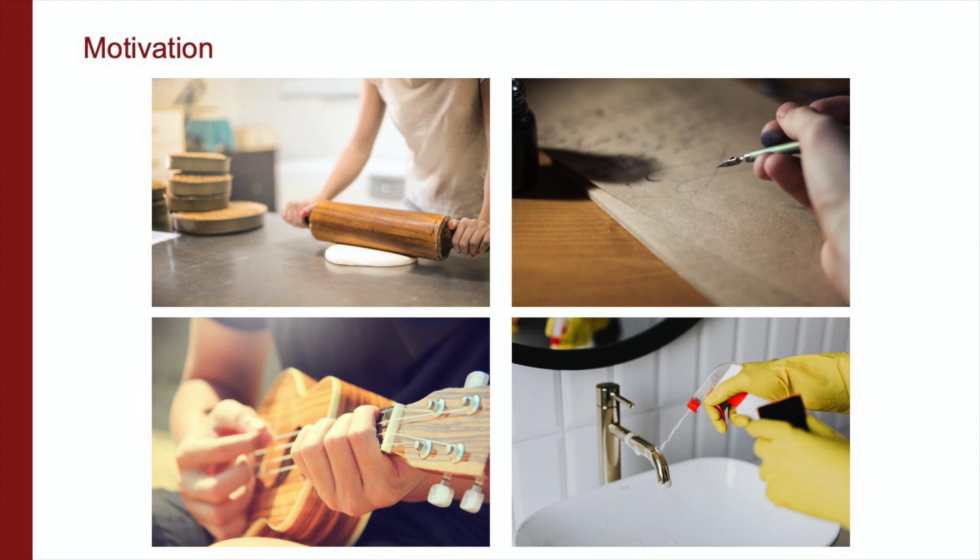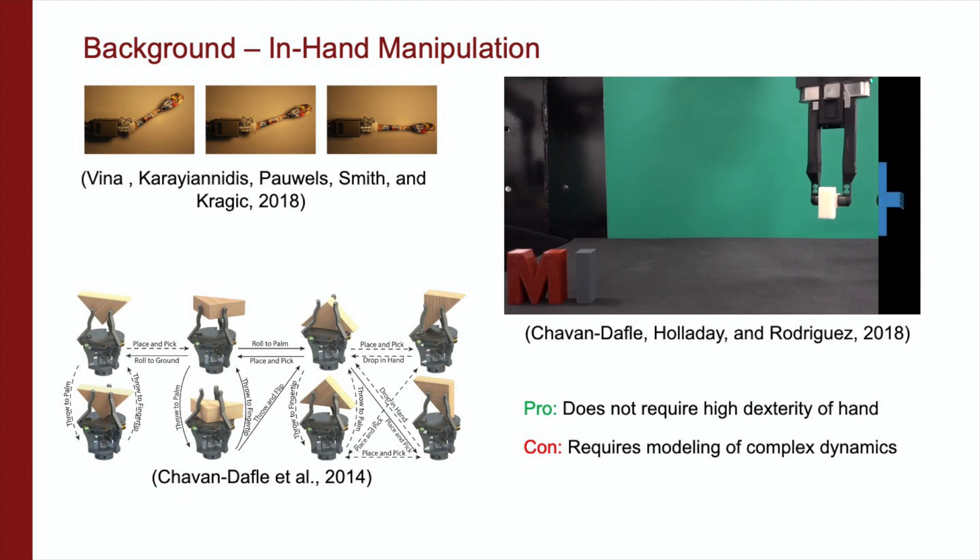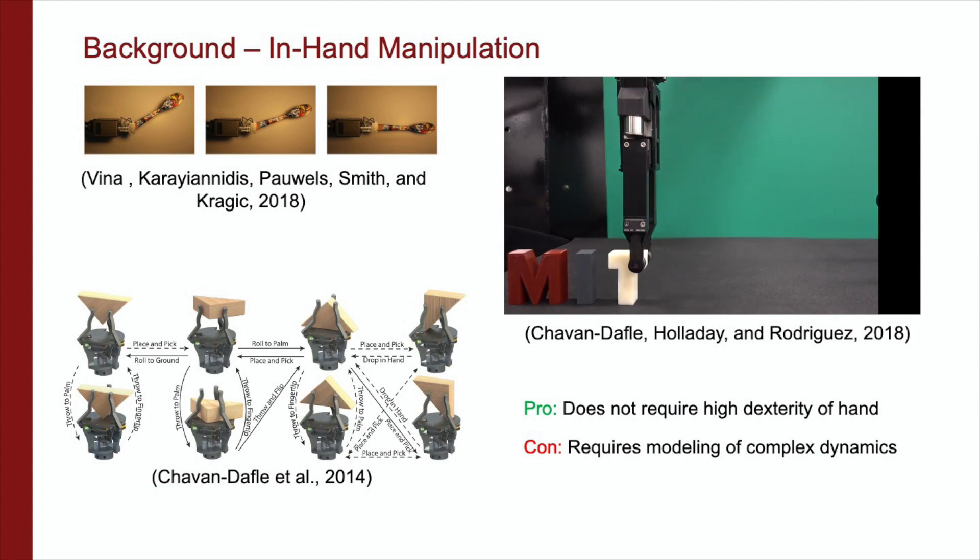Out of all the grasping and manipulation tasks, in-hand manipulation is among the ones that require the most dexterity. There are different approaches to in-hand manipulation that have been explored which rely on gravity with controlled slip, induced accelerations, or the environment to reduce the dexterity required of the hand. However, such approaches require complex control and modeling schemes with dependency on available environmental geometry.